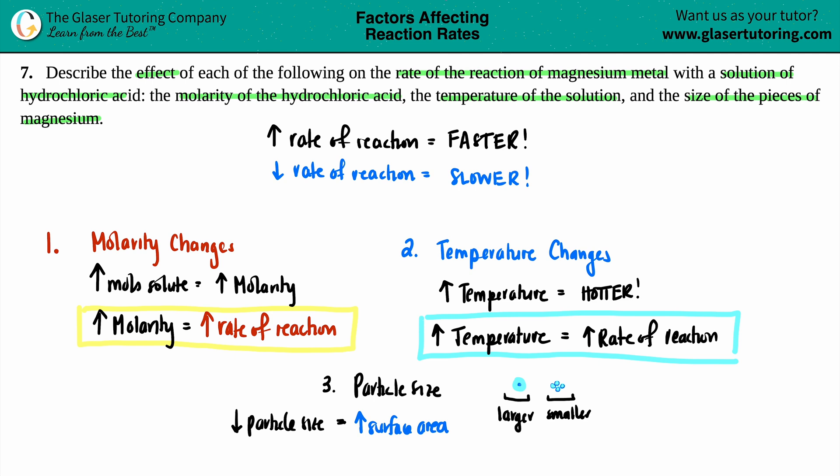This is going to increase the rate of reaction, make it faster. So in this case, this is the only one that's basically an inverse relationship. If you have a particle size that is smaller, that means that your rate of reaction will increase. But the other ones are direct relationships, increase, increase.